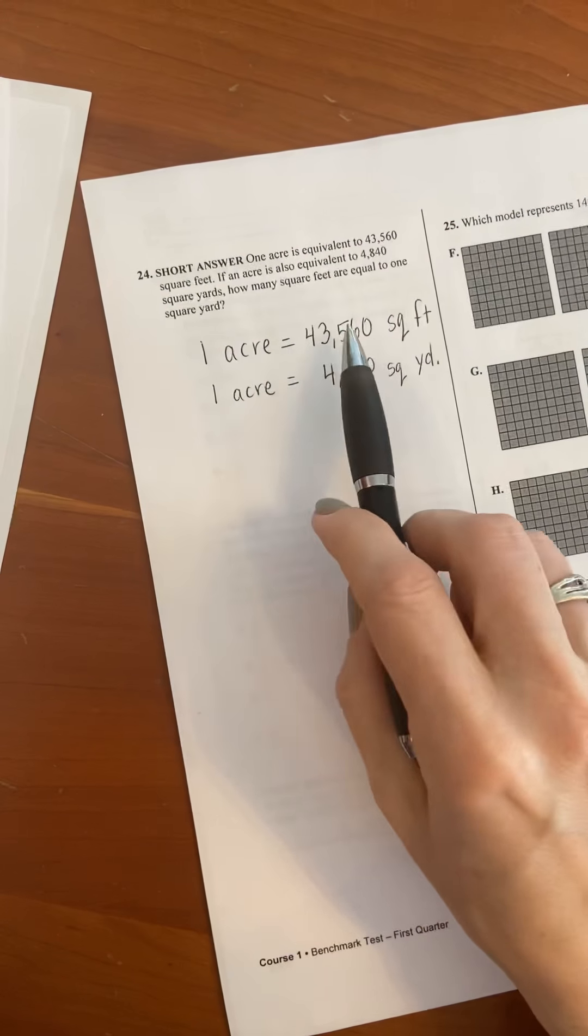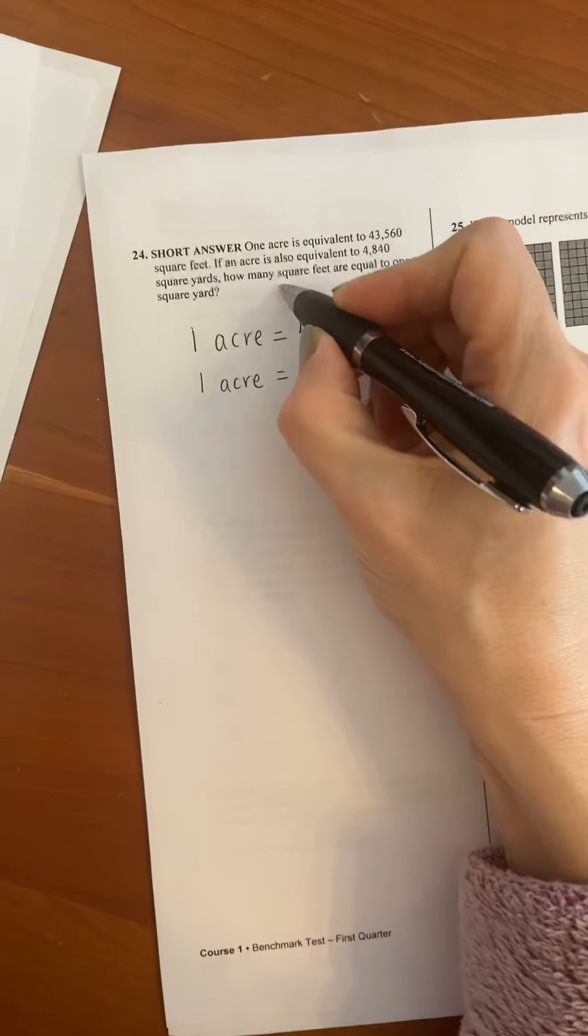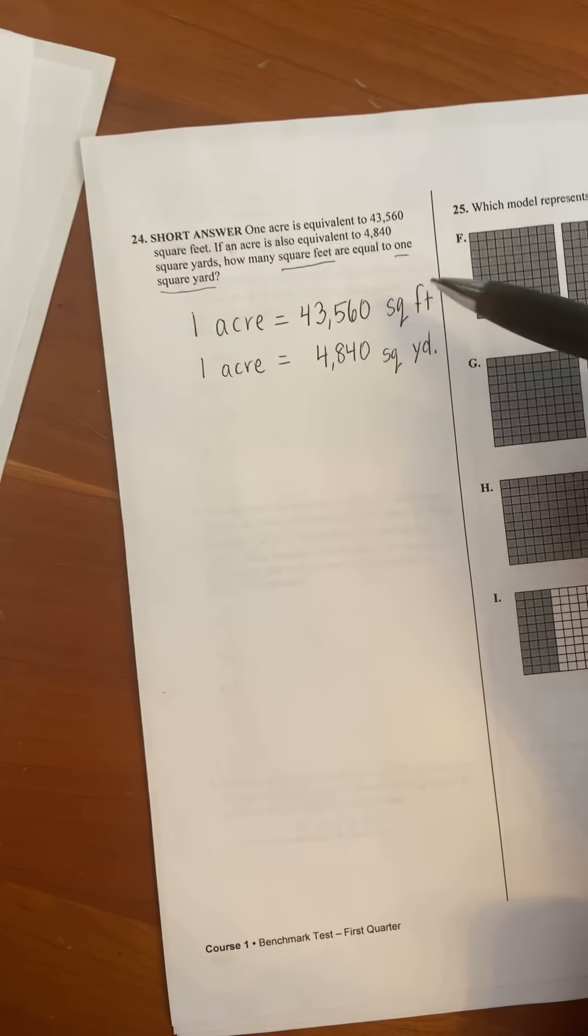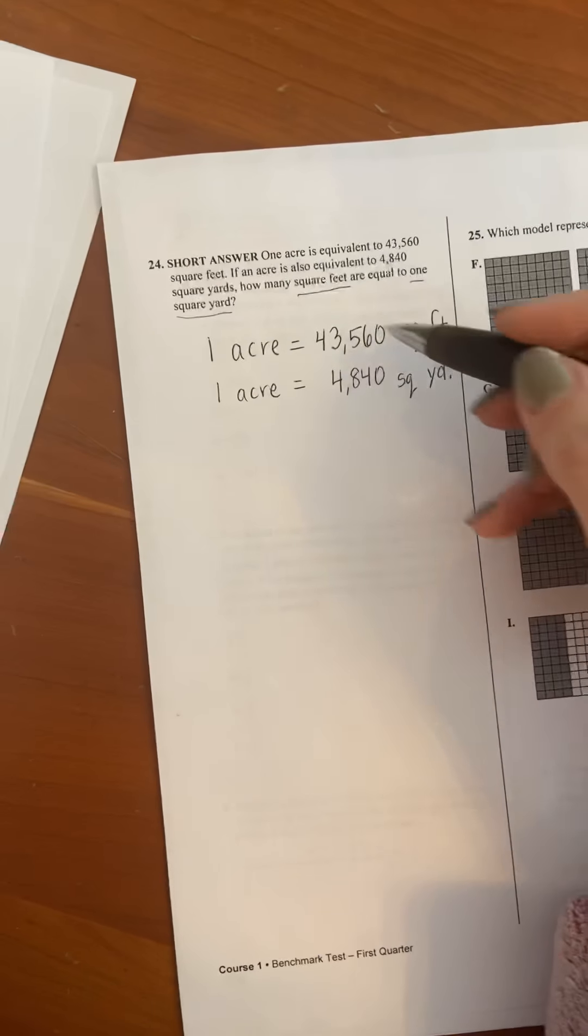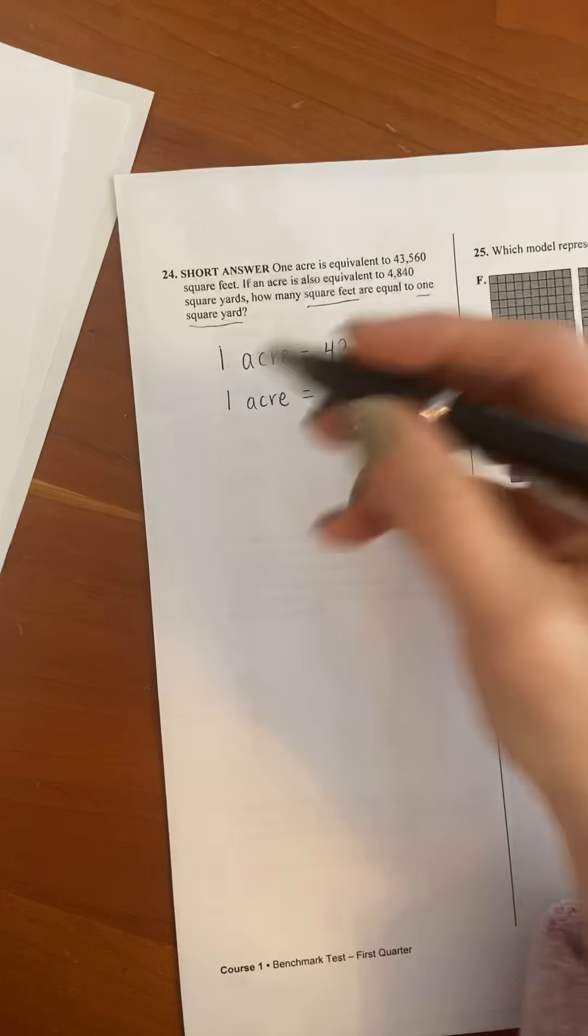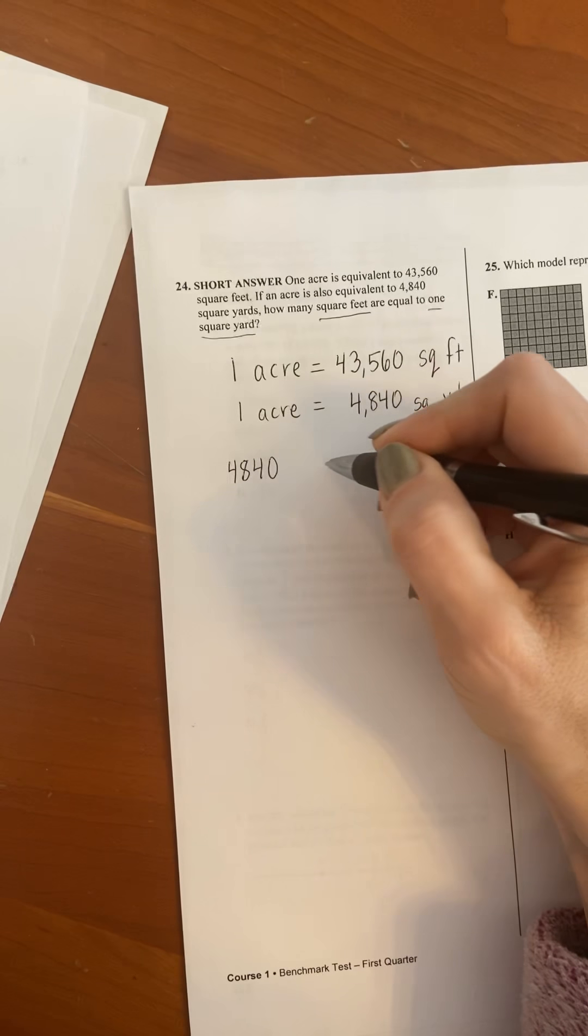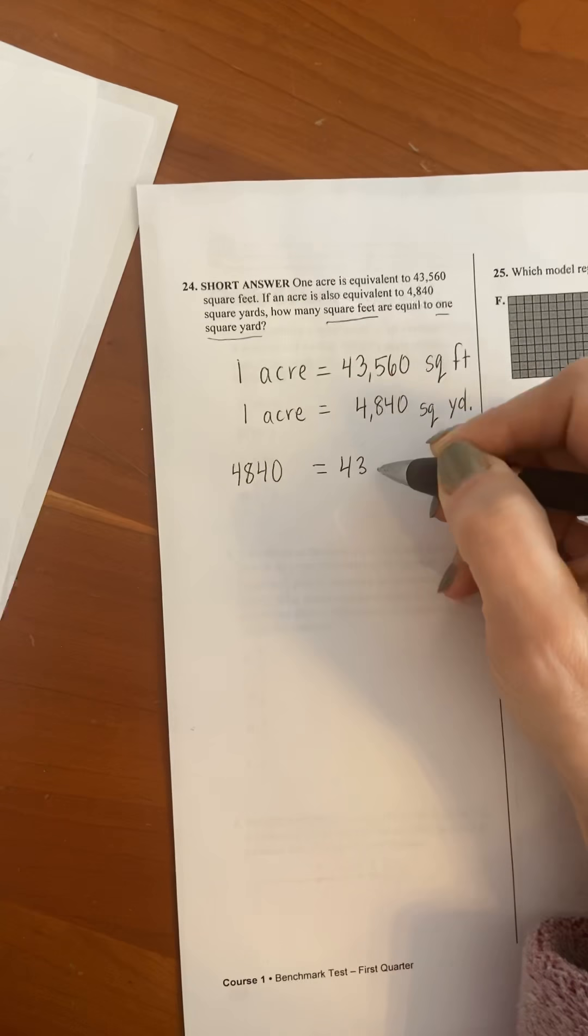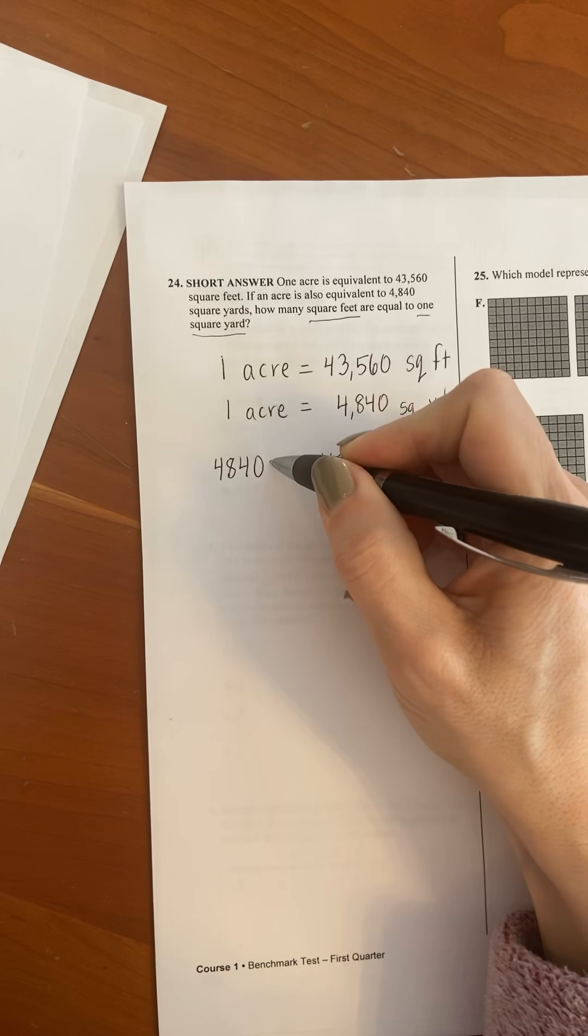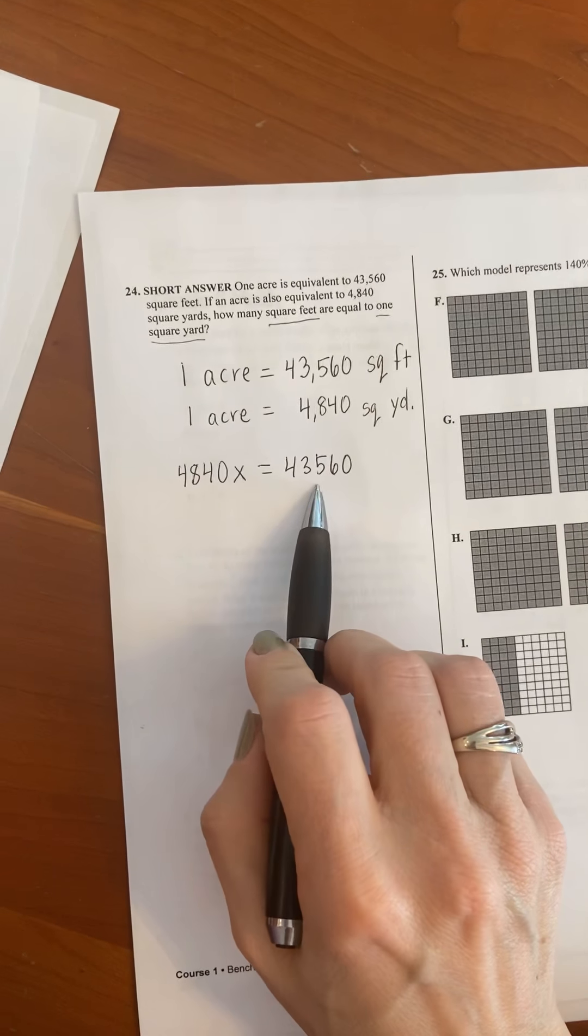And so they're saying okay if you know that these two numbers are both equal to one acre then how many square feet are in one square yard. So you can use these numbers to figure it out but you actually don't have to. So the way you would set this up is you would say to yourself well if both of these numbers equal one acre then that means they're also equal to each other because 4,840 square yards is equal to 43,560 square feet. And so what you have to ask yourself is what would I multiply the square yards by to equal the square feet?